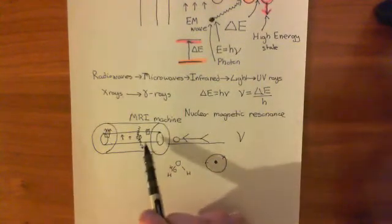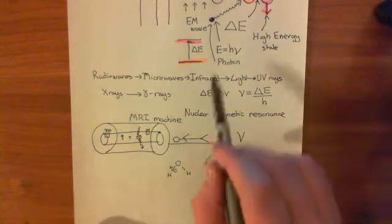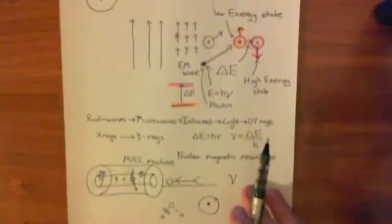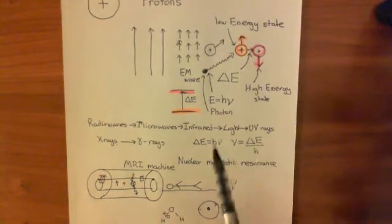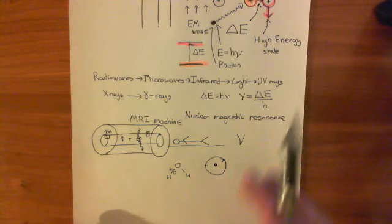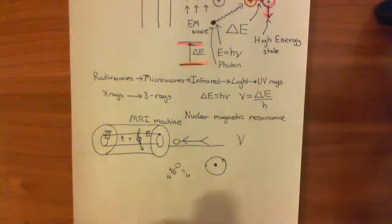All the other patches where the magnetic field strength was wrong, and the energy difference was wrong, those protons will not go from the low energy state to the high energy state when you irradiate them. So you won't get this emission of photons.